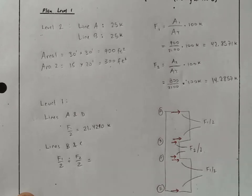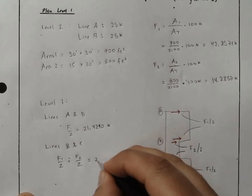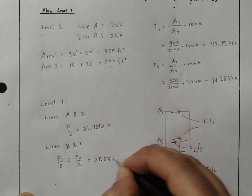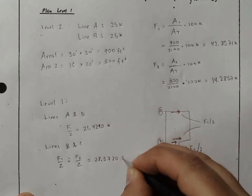Again, if I do this calculation, F1 divided by 2, F2 divided by 2, I'll find that this force is 28.6, or, keeping a few more decimals, 28.5720.